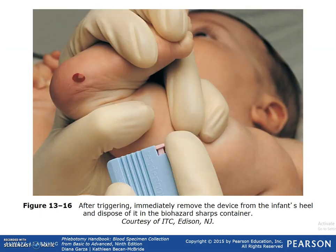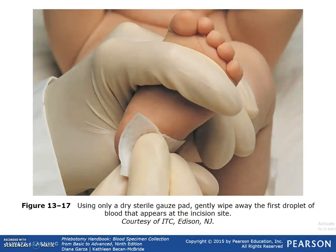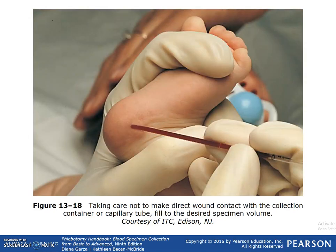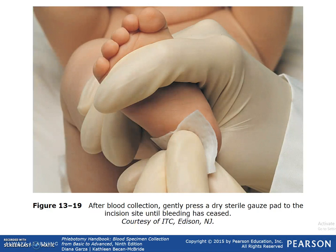After activating the device, you will start to see a drop of blood on the infant's heel. Using only a dry sterile gauze pad, gently wipe the first droplet of blood that appears on the incision site, taking care not to make direct wound contact with the collection container or capillary tube, and fill to the desired level. A pipette system or capillary tube can be used to collect blood from babies. Once collection is complete, place a gauze pad to the incision site until bleeding has ceased to help prevent a hematoma from forming.